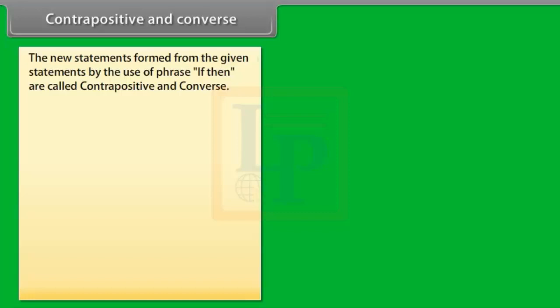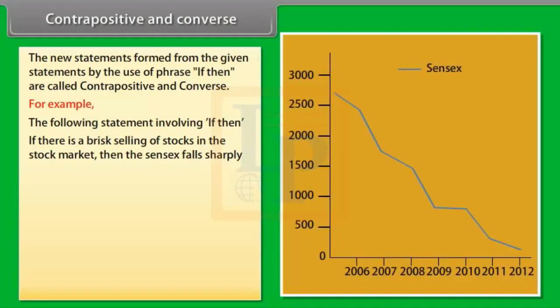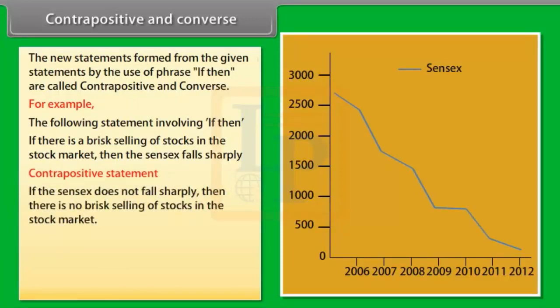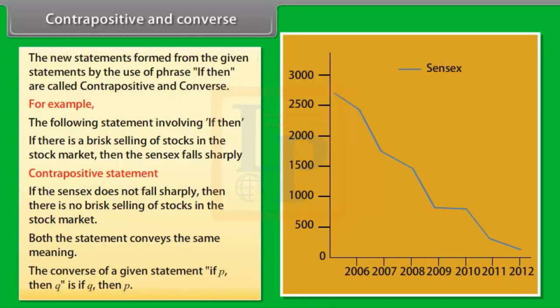Contrapositive and Converse. New statements formed from a given statement by use of 'if-then' are called contrapositive and converse. For example, for the statement 'If there is a brisk selling of stocks in the stock market, then the sensex falls sharply,' the contrapositive is 'If the sensex does not fall sharply, then there is no brisk selling of stocks in the stock market.' Both statements convey the same meaning.